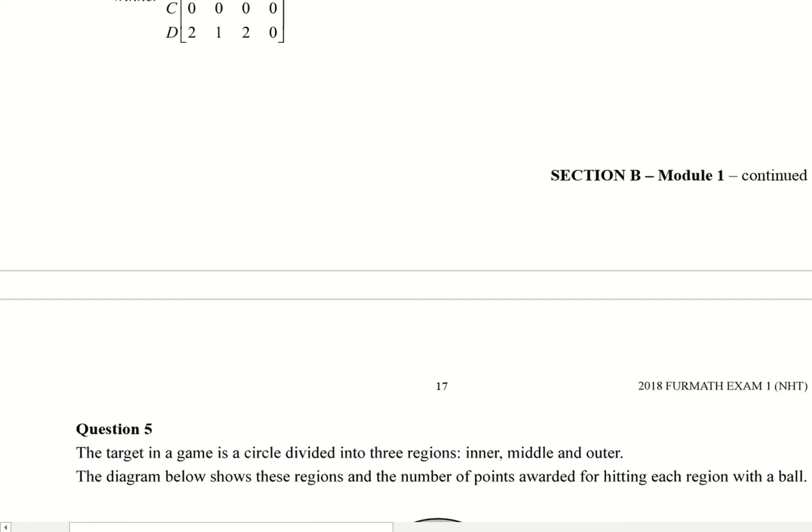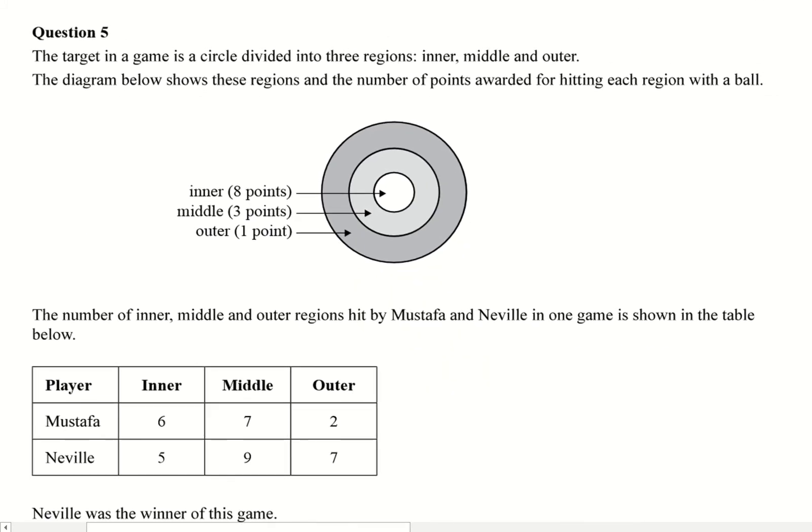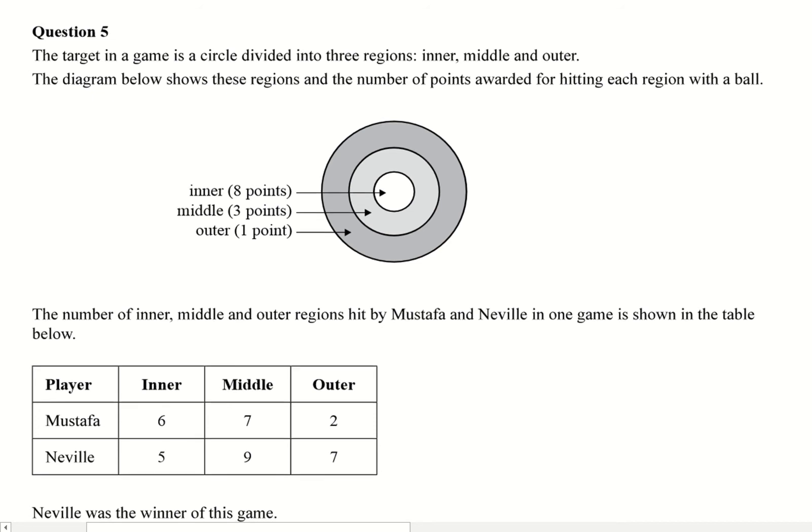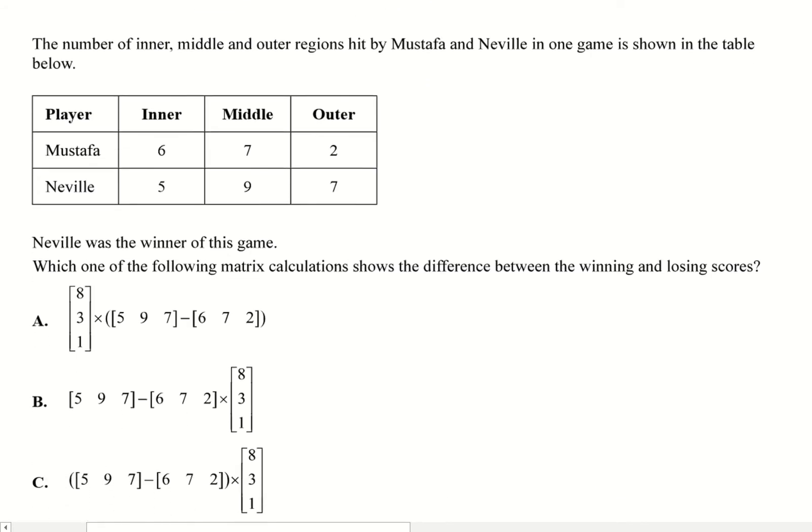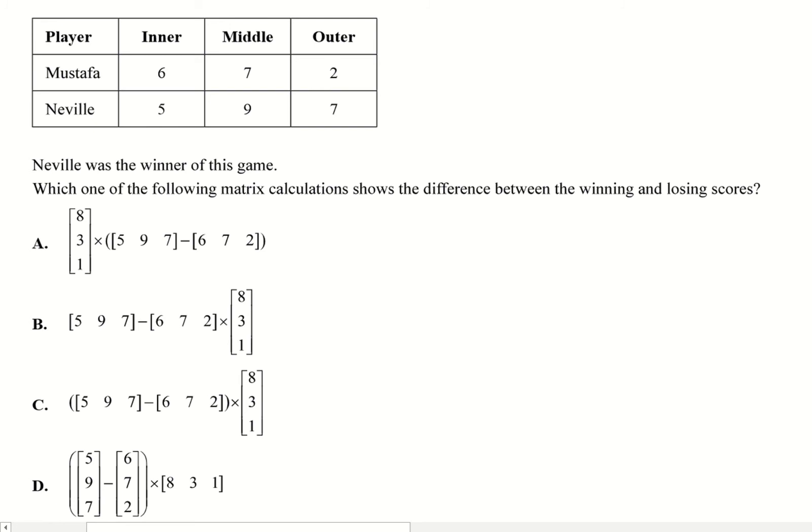All right. The target in a game is a circle divided into three regions: inner, middle, and outer. So the diagram below shows these regions and the number of points awarded for hitting each region with a ball. The number of inner, middle, and outer regions hit by Mustafa and Neville in one game is shown in a table below. Neville was the winner of this game. Which one of the following matrix calculations shows a difference between the winning and losing scores?